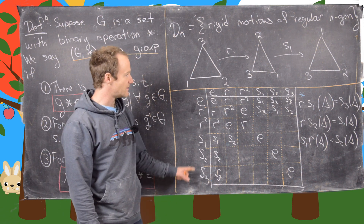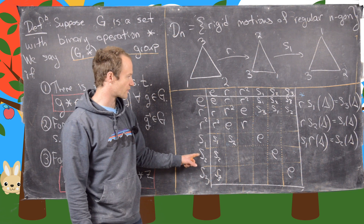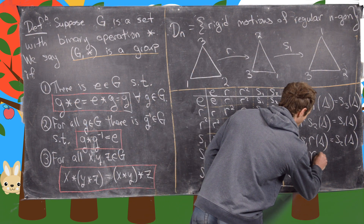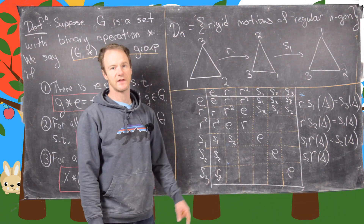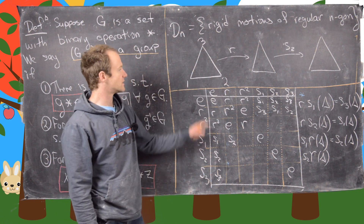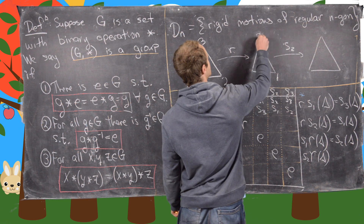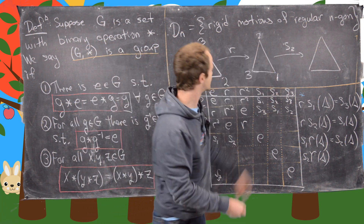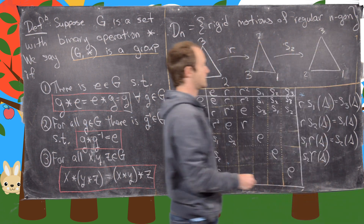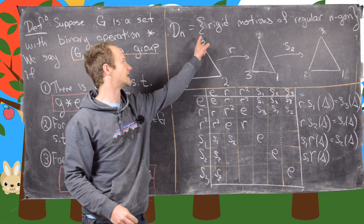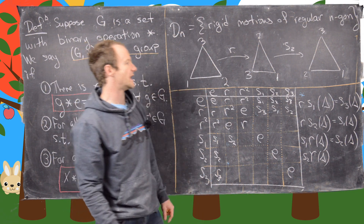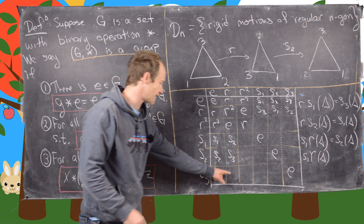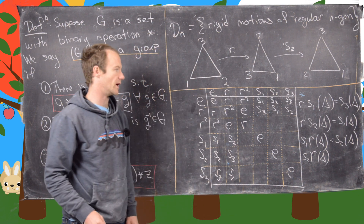Now let's do S2 composed with R. R acts first — giving positions 1, 2, 3 — and then S2 reflects about that axis, giving positions 2, 3, 1. Looking from beginning to end, vertex 3 is fixed and vertices 1 and 2 have been switched — so S2 times R equals S3. By a similar calculation, S3 times R equals S1.